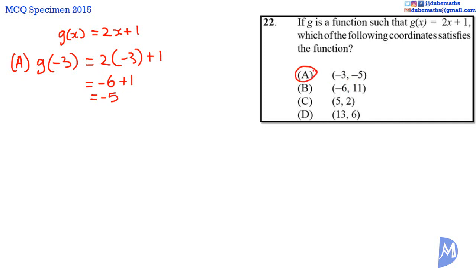I know you want to make sure, so let's look at the others. For B, g(-6) = 2(-6) + 1. 2 times -6 is -12, added to 1 equals -11. Negative 11 is not equal to positive 11, so B is not correct.